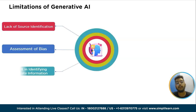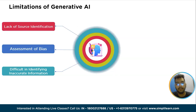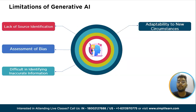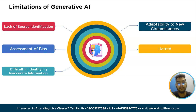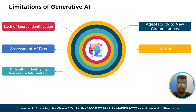The third limitation is difficulty in identifying inaccurate information — generative AI can generate realistic content, making it harder to identify inaccuracies or falsehoods within the generated output. The fourth is adaptability to new circumstances — understanding how to fine-tune generative AI for new circumstances or specific contexts can be complex, requiring careful consideration and expertise to achieve desired results. The fifth is glossing over bias, prejudice, and hatred — generative AI results may amplify or perpetuate biases, prejudices, or hateful content present in the training data, requiring vigilant scrutiny to prevent such issues. Awareness of these limitations is crucial when implementing or utilizing generative AI, helping users and developers critically evaluate and mitigate potential risks.